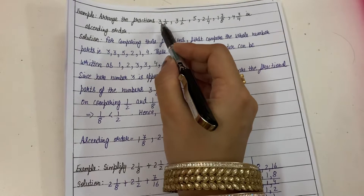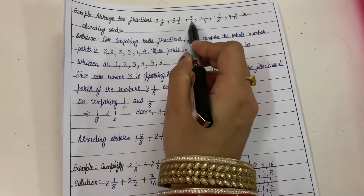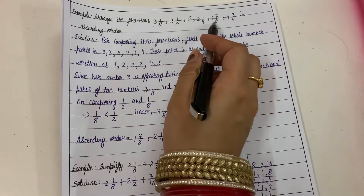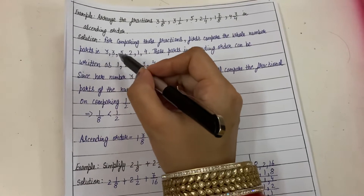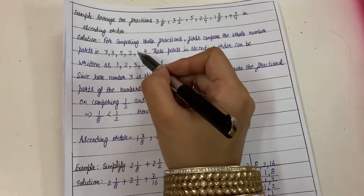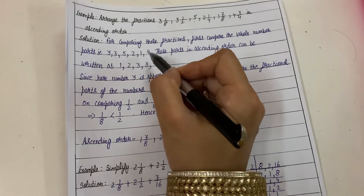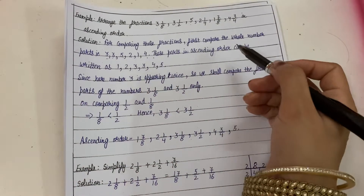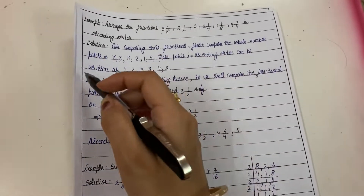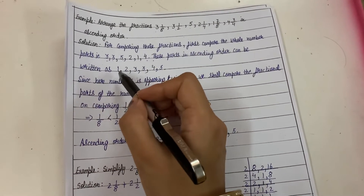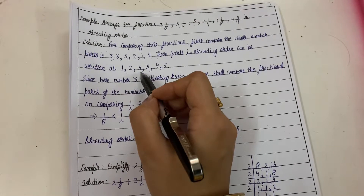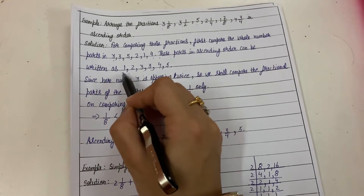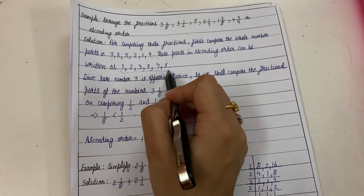The whole number parts are 3, 3, 5, 2, 1, 4. Arranging these in ascending order gives: 1, 2, 3, 3, 4, 5. Most are already in order, but since 3 appears twice we need to compare the fractional parts of those two fractions.